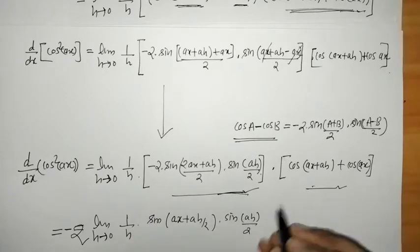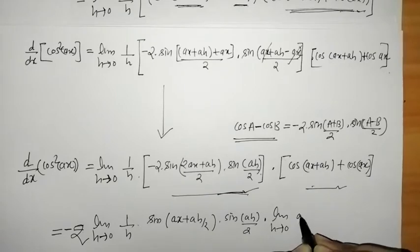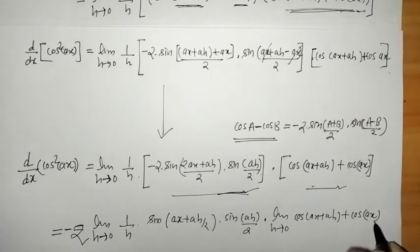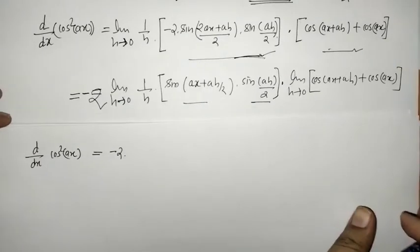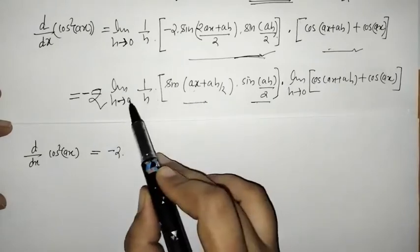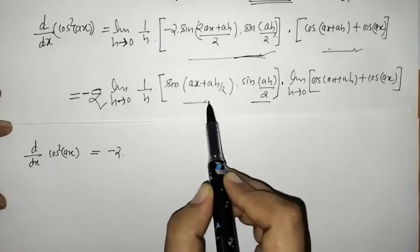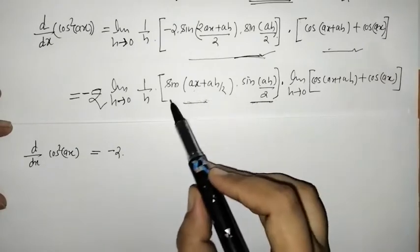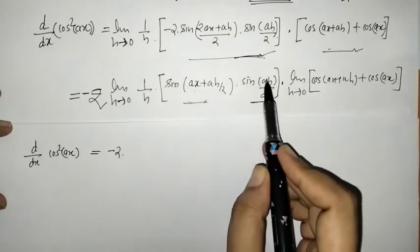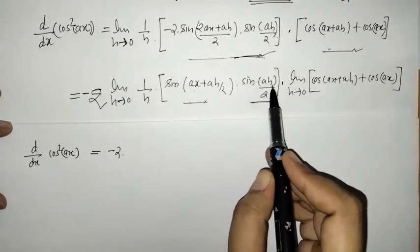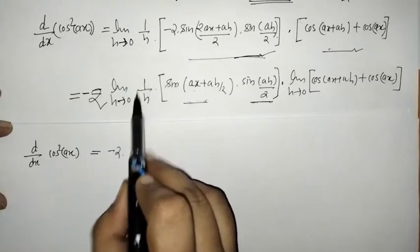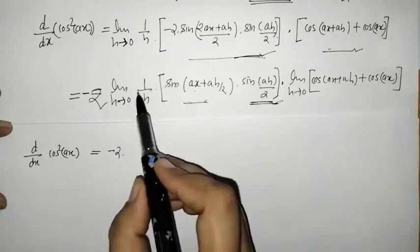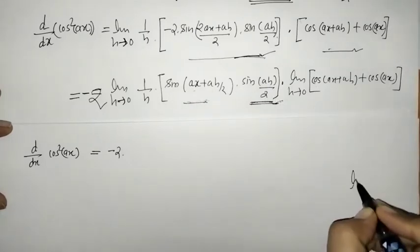Applying the limit to the first part: limit h tends to 0 of cos(ax+ah) plus cos(ax). When we put h equals 0 in the other term, we have 1 upon h into sin(ah/2), which gives a 0 over 0 form. So we need to do an adjustment to apply the standard limit formula limit x→0 of sin(x)/x = 1.